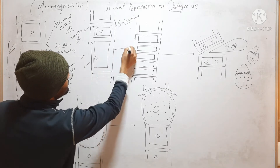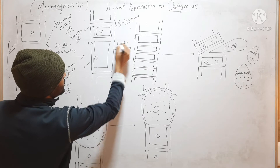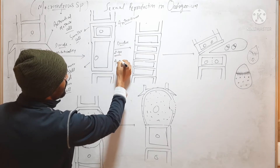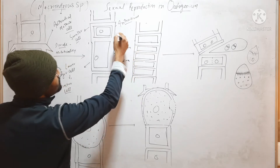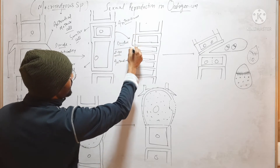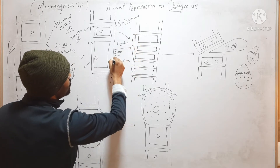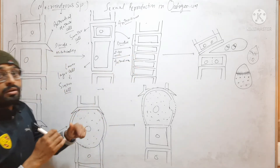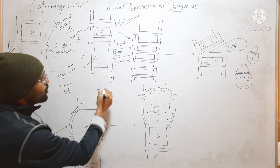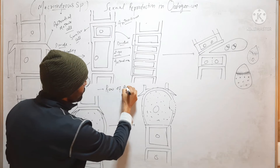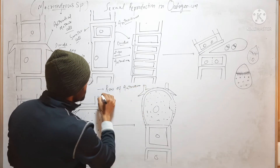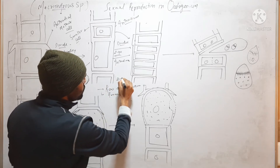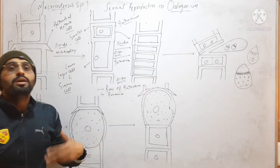This larger sister cell further divides many times and forms 2 to 40 antheridia. So by repeated division of the sister cell, a row of antheridia is formed. The number may vary from 2 to 40 according to species.